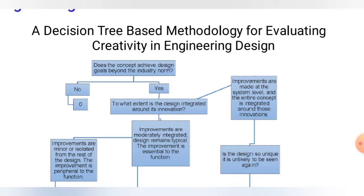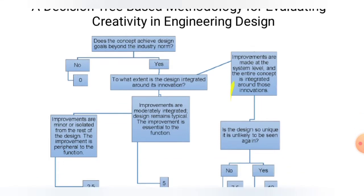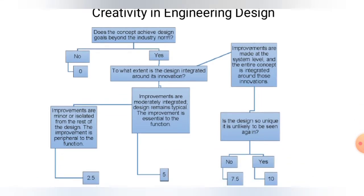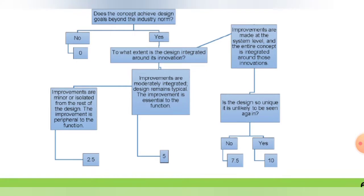That main node consists of two branches. The first: improvements are made at the system level and the entire concept is integrated around those innovations. If yes and the design is so unique it is unlikely to be seen again, it receives a score of 10. If no, it receives a score of 7 points.